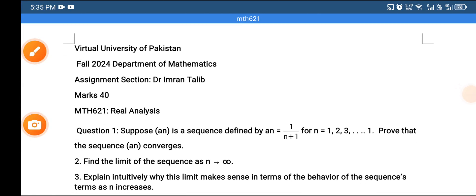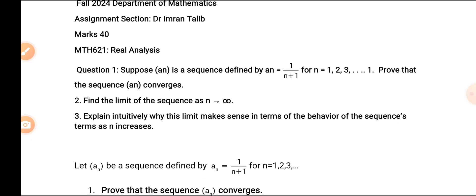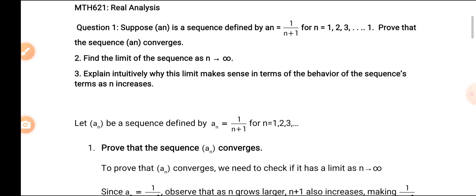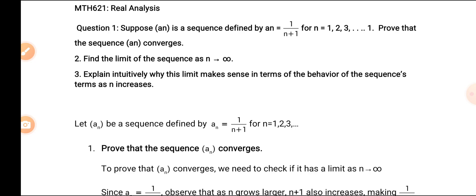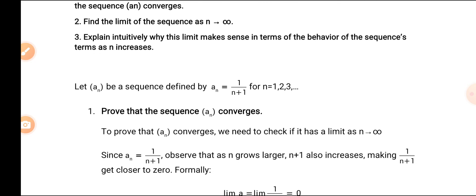Assignment No. 1, MTI 621, worth 40 marks, section in charge Dr. Imran Talib. Question No. 1: suppose An is a sequence defined by An = 1/(n+1) for n = 1, 2, 3, and so on. First, prove that the sequence An converges. Second, find the limit of the sequence as n approaches infinity. Third, explain why this limit makes sense in terms of the behavior of the sequence's terms as n increases.